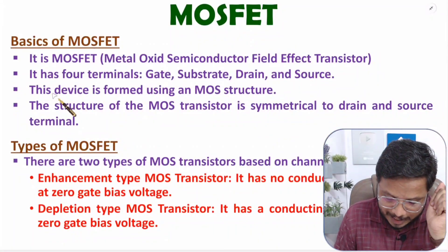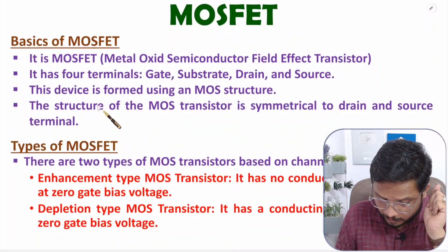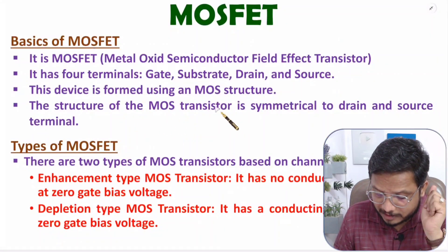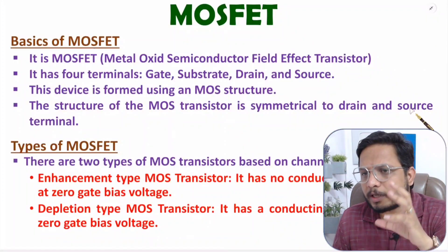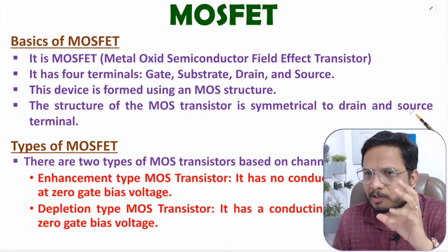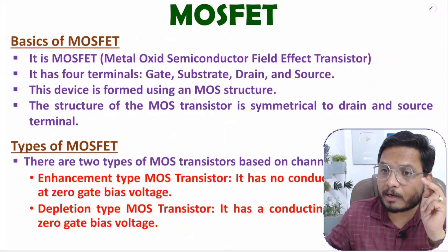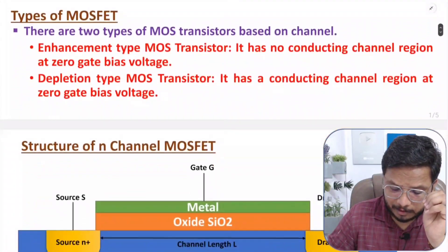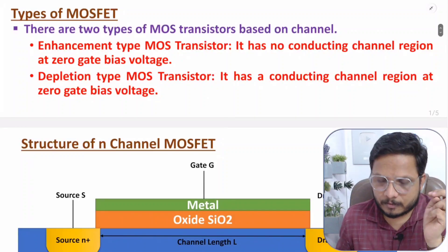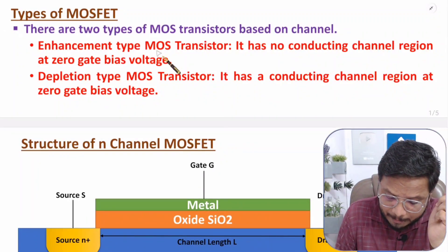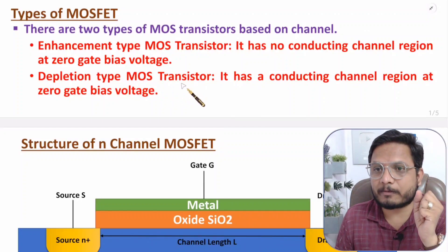When we talk about different types of MOSFET, in general there are two types: one is enhancement type MOS transistor and the second is depletion type MOS transistor.